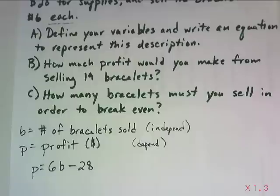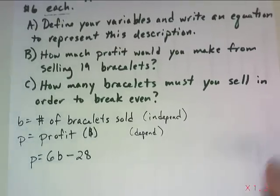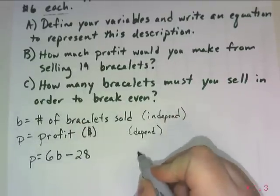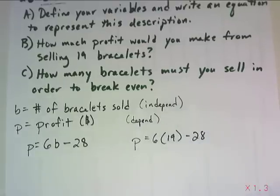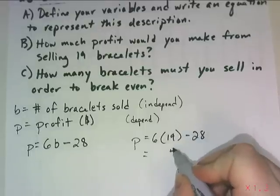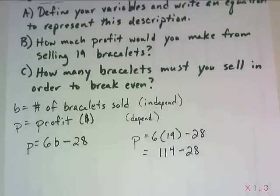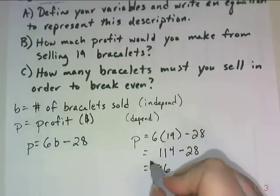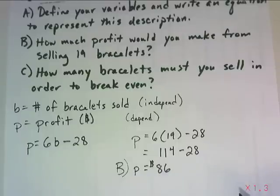Now let's use this equation to answer parts b and c. How much profit would you make from selling 19 bracelets? I'm solving for p with b equal to 19. p equals 6 times 19 minus 28. 6 times 19 is 114, minus 28 gives me 86. So my answer to part b is $86. Because I solved for p — profit — which is measured in dollars, $86 is my profit.